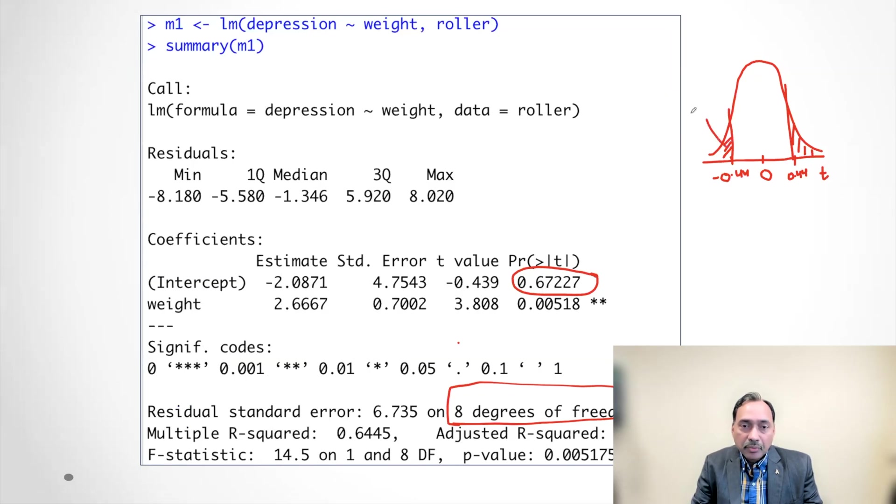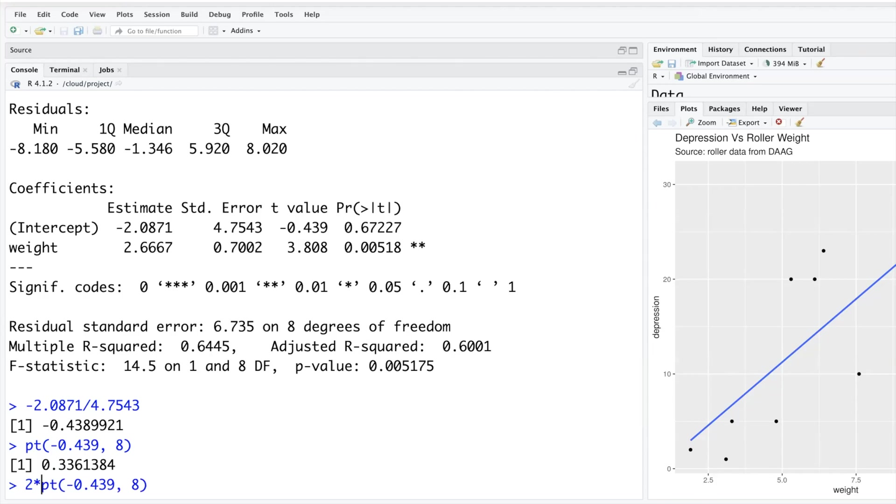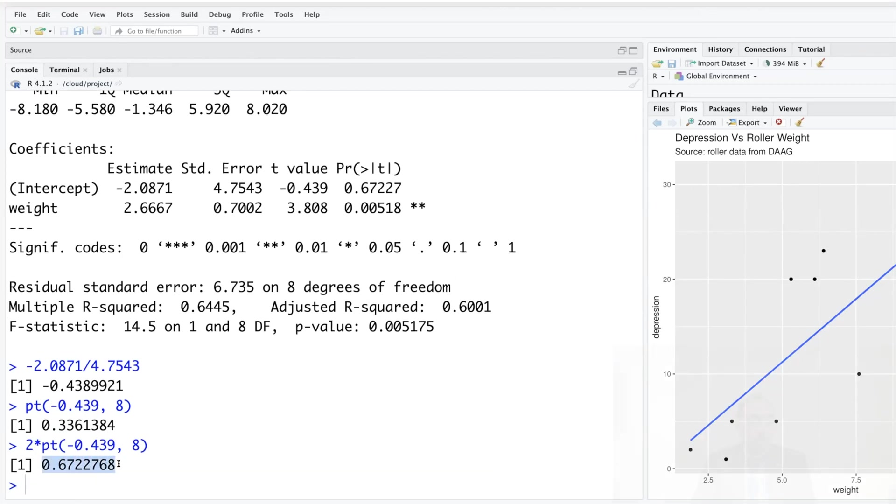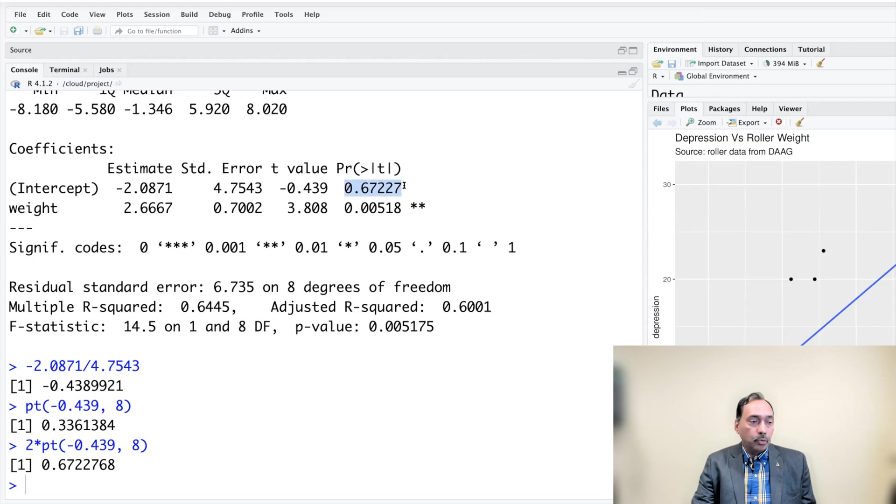That gives us this area 0.336. It is area to the left. And because this other side is a mirror image, that also is 0.336. Two times probability is 0.67227. So these values actually, standard errors and t-values, are basically summarized in the form of p-value. Ultimately, we are more interested in p-value. And same thing for weight.